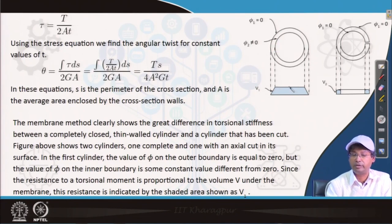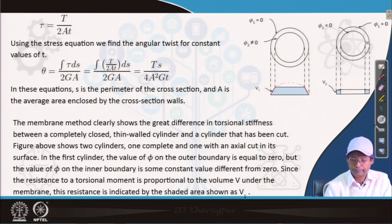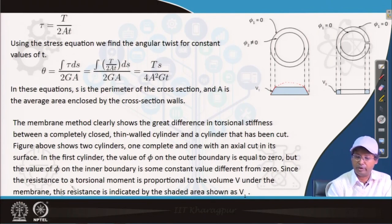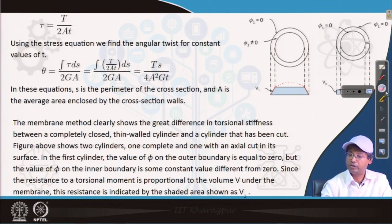In this equation s is the perimeter of the cross section and A is the average area enclosed by the cross section wall. The membrane method clearly shows the great difference in torsional stiffness between a completely closed thin wall cylinder and a cylinder that has been cut. Figure above shows two examples we are considering to discuss with membrane analogy and how the torsional resistance varies. In the first cylinder the value of φ on the outer boundary is equal to 0, but the value of φ on the inner boundary is some constant value different from 0. If we put some internal pressure the membrane is something like this.